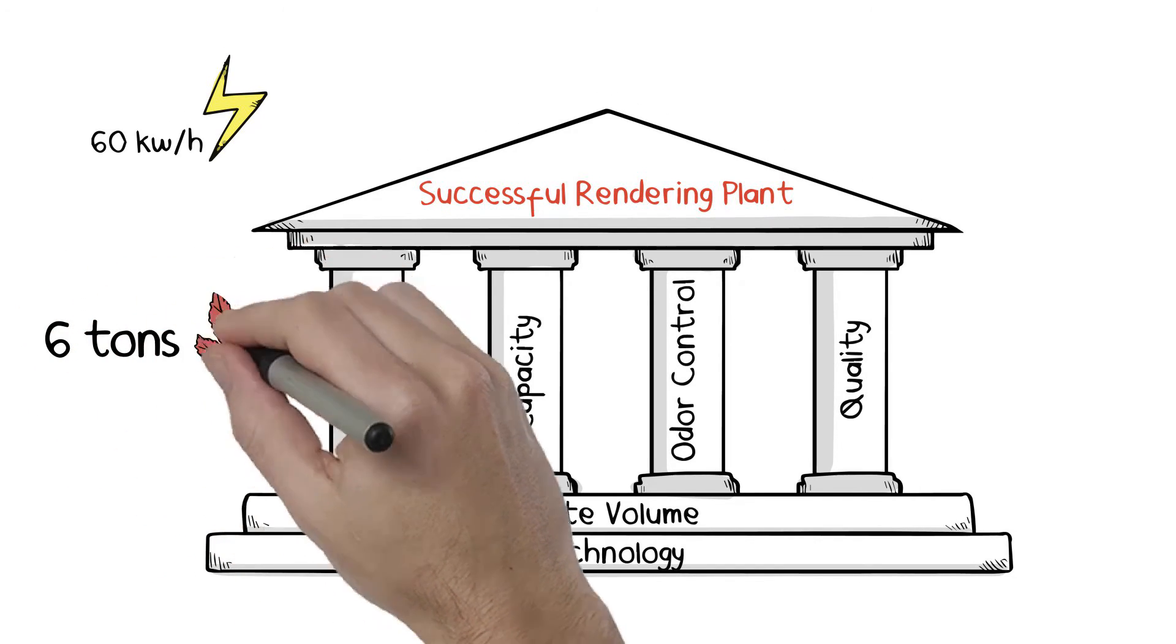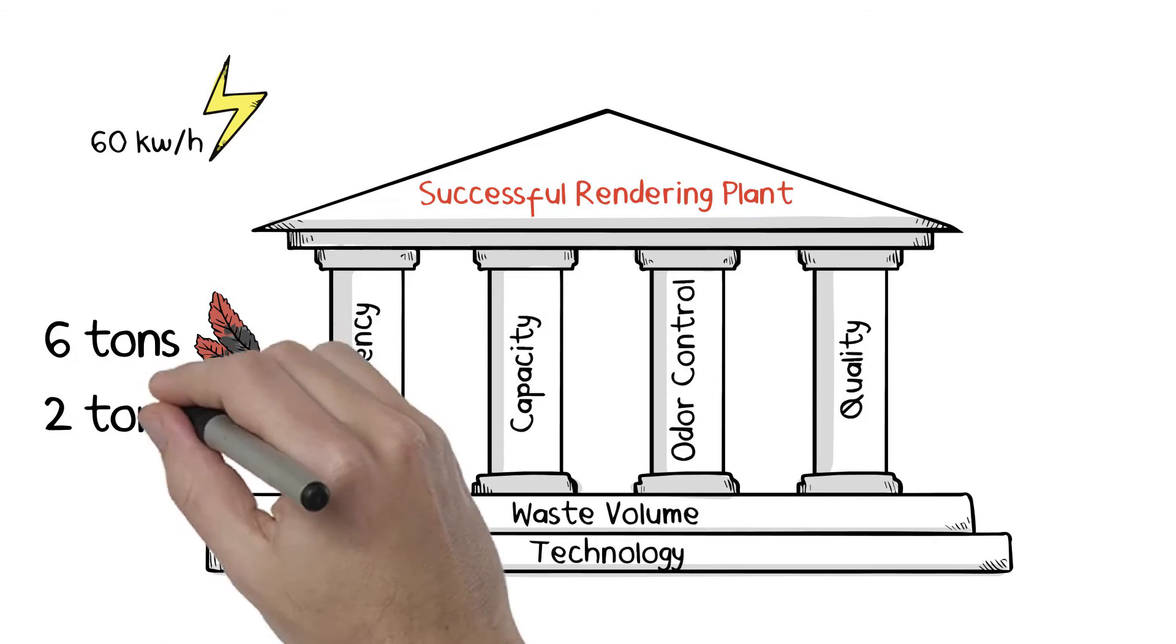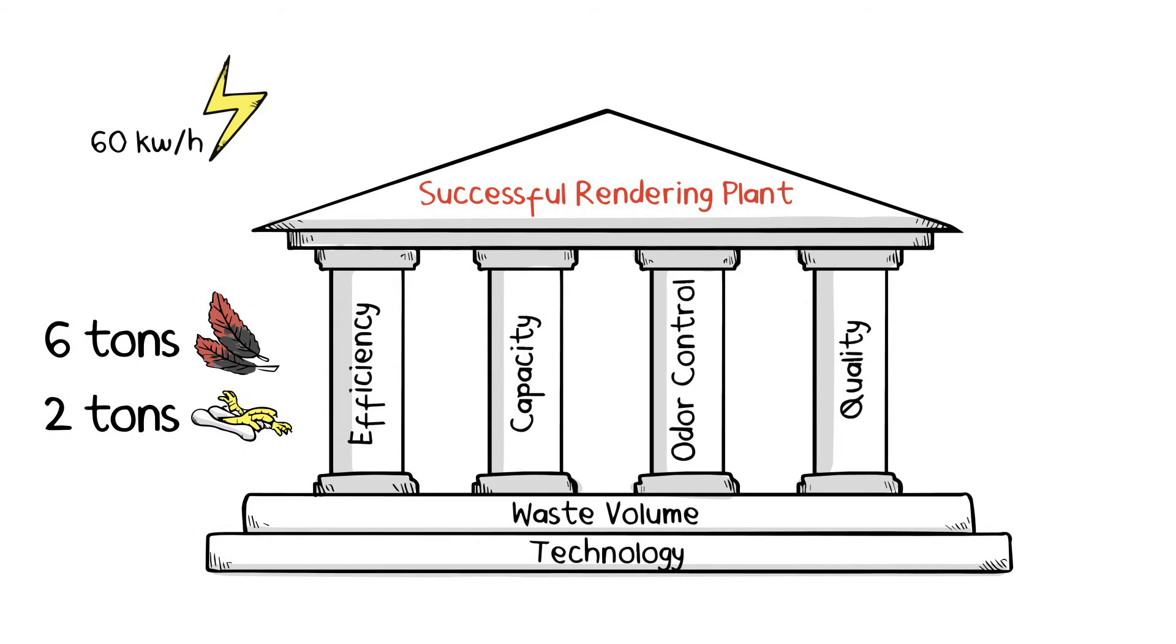2. Capacity, it can process 6 tons of feathers or 2 tons of flesh and bones per day.